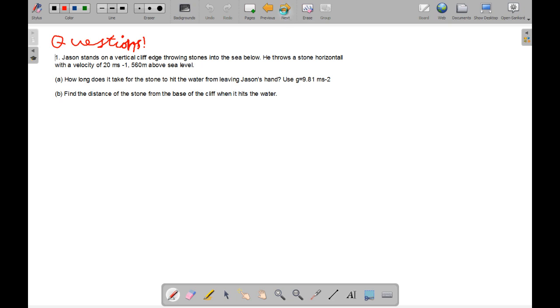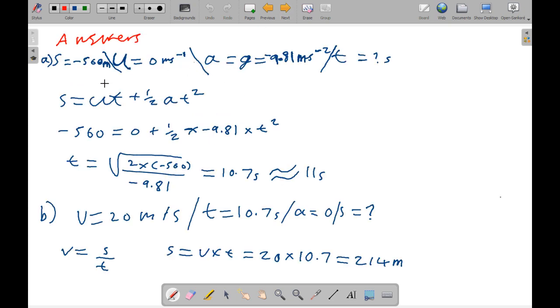Okay, hopefully you should have had a go, and now we'll look at the answers. So, s is minus 560 meters as the object is going down. And g is minus 9.81 because the object is going down. U is always zero, and t is, we don't know. s is ut plus half at squared. Minus 560 equals 0 plus half times minus 9.81 times t squared. And then square rooting t, we get t equaling square root of 2 times minus 560 all over minus 9.81 to equal 10.7 seconds, which is approximately equal to 11 seconds.